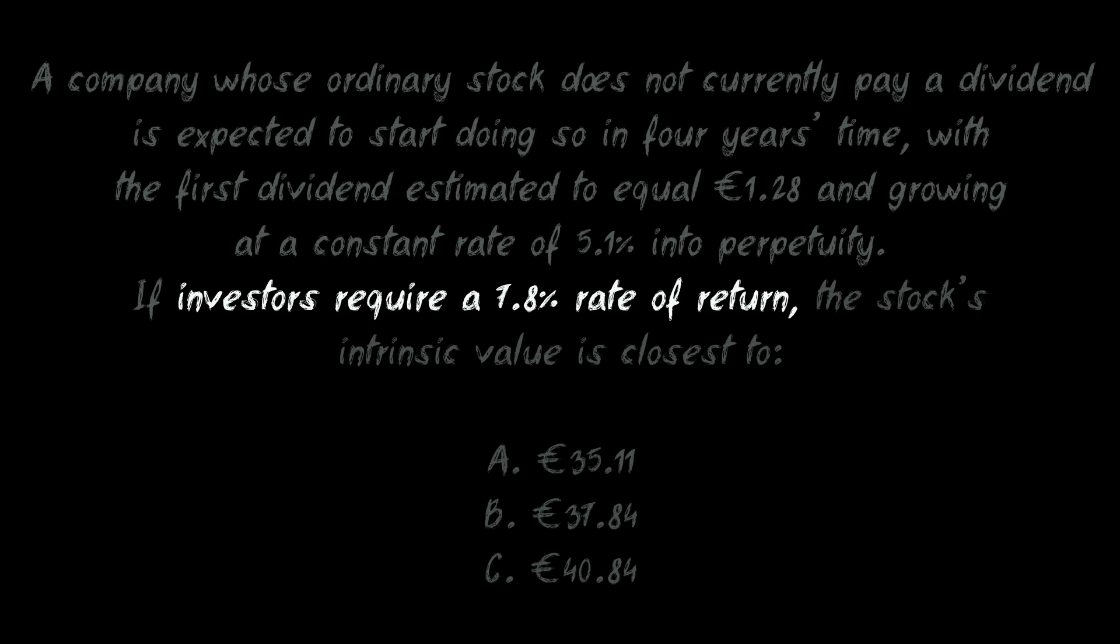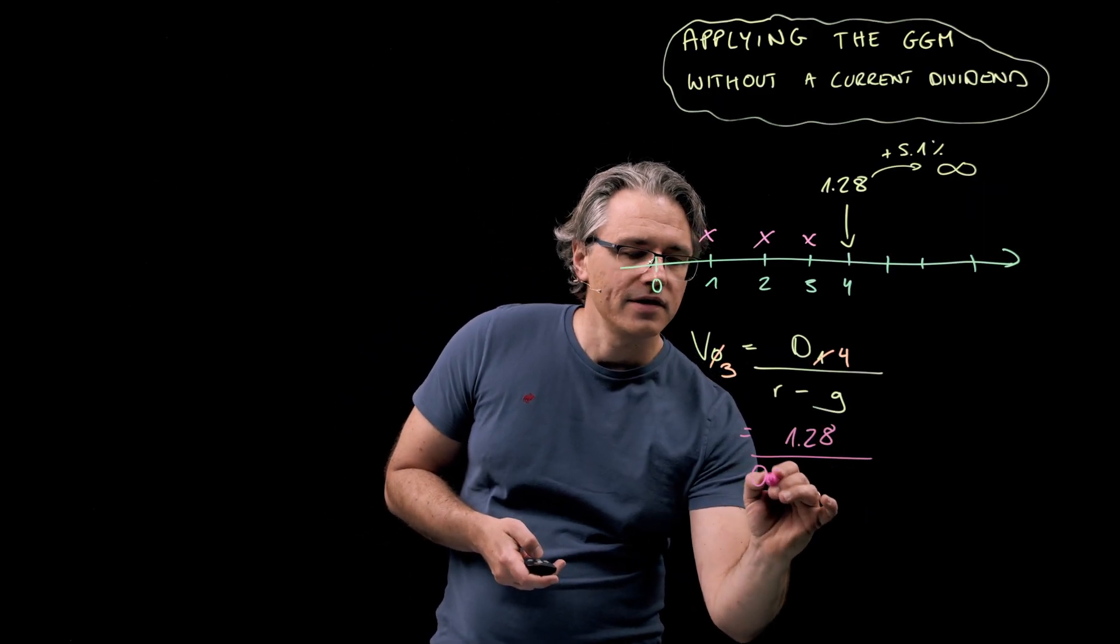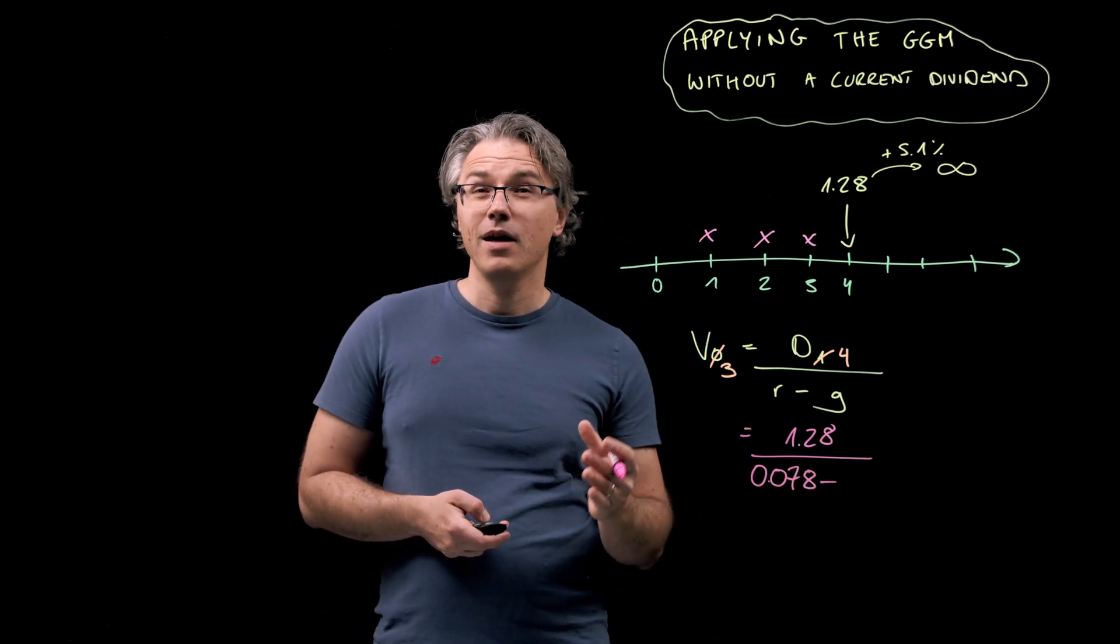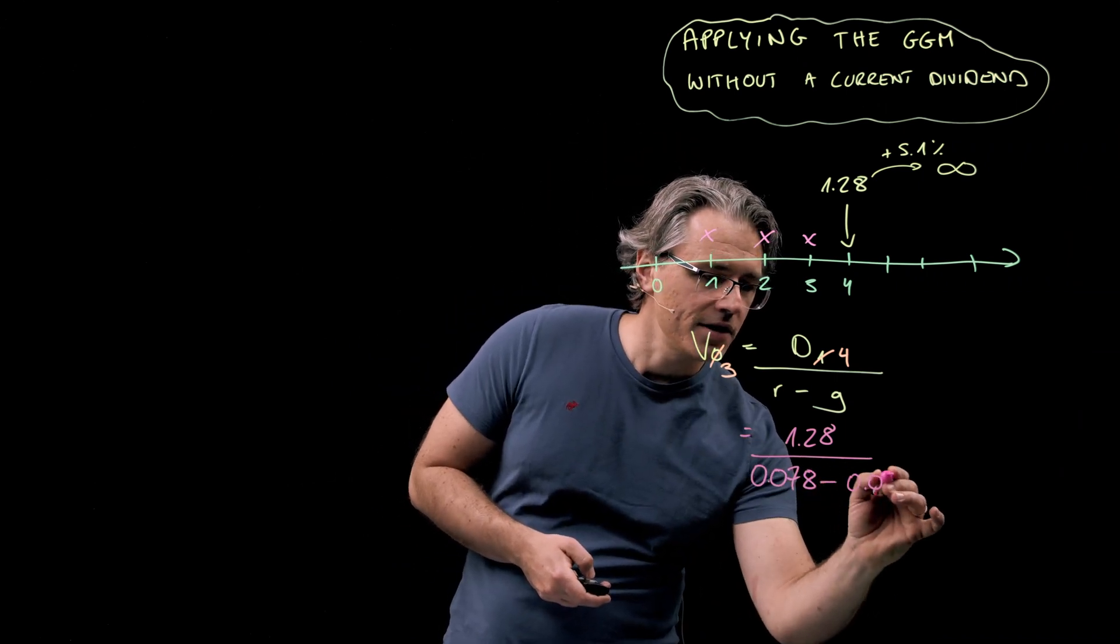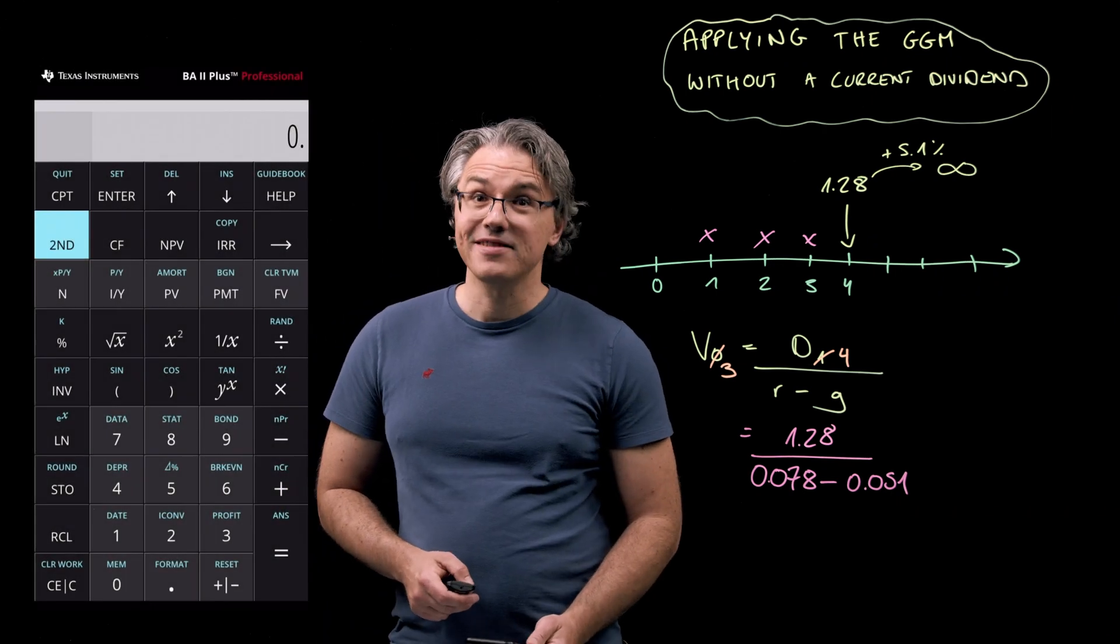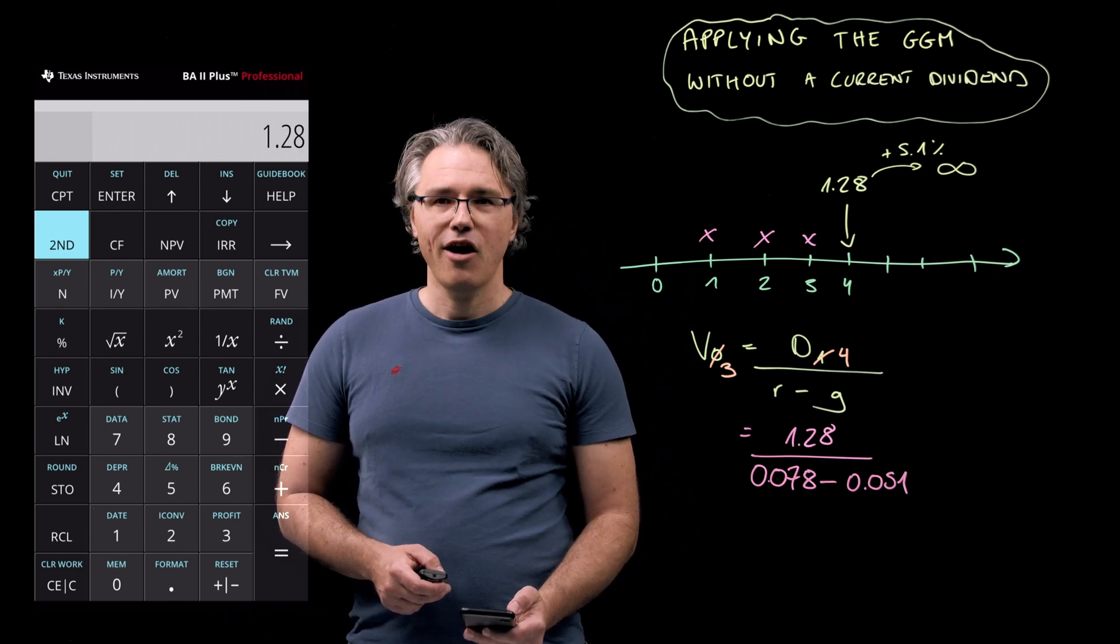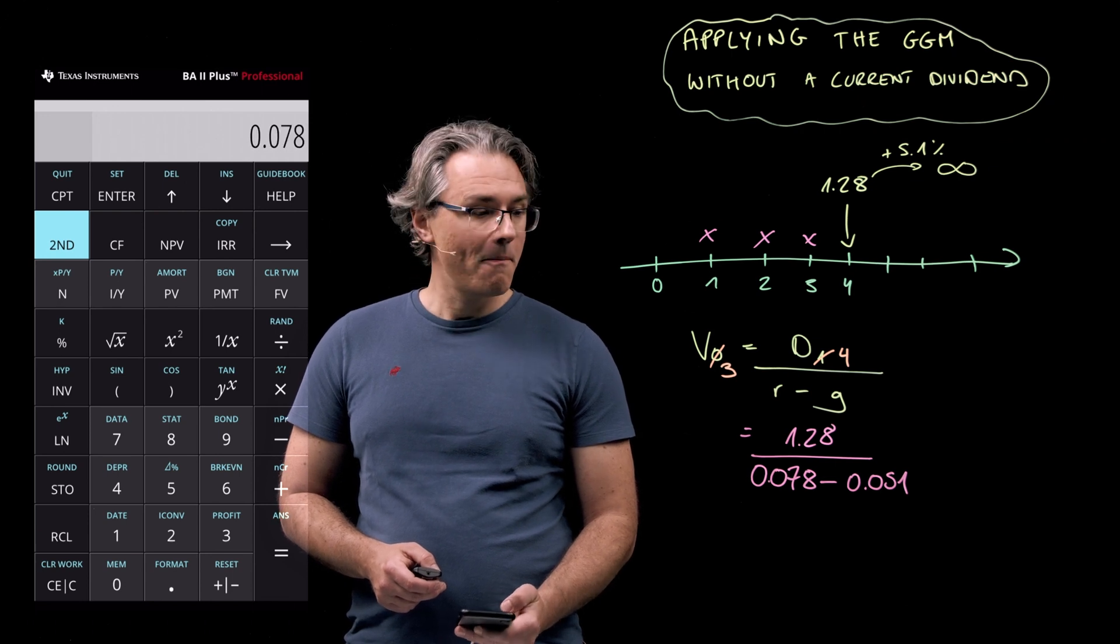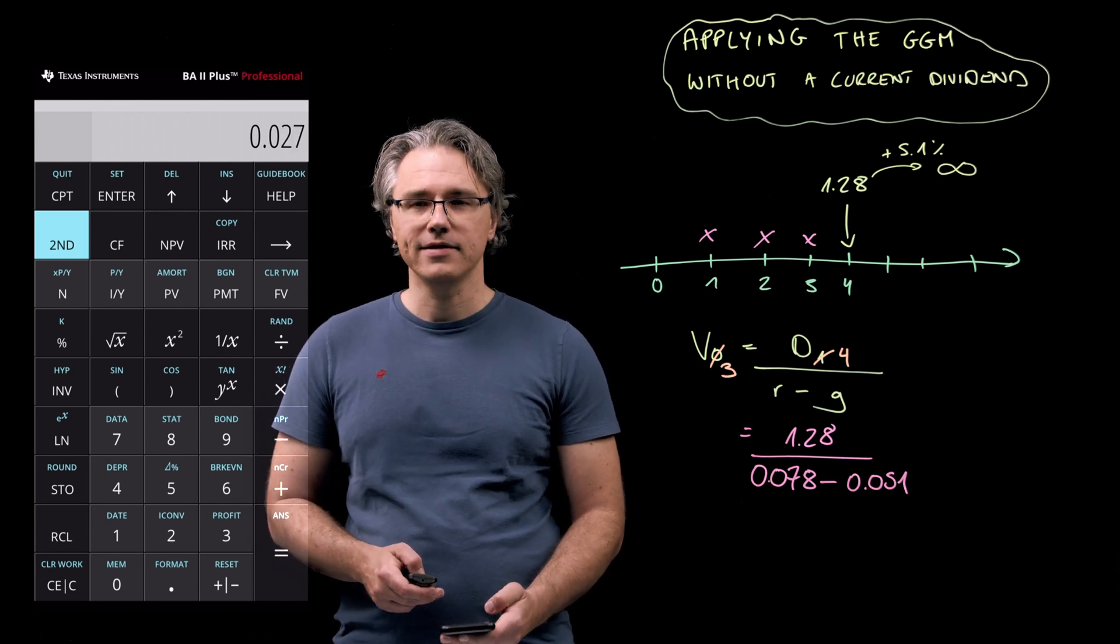So 0.078 minus g, which I have already got up here. So 0.051 or 5.1%. Using my Texas Instruments calculator: 1.28 over 0.078 minus 0.051, close bracket, equals.